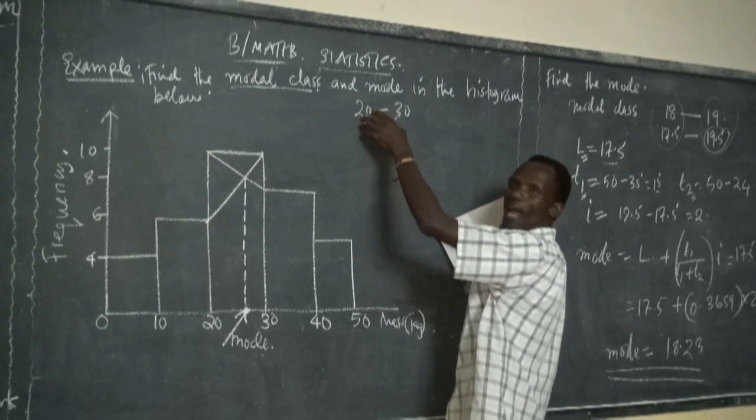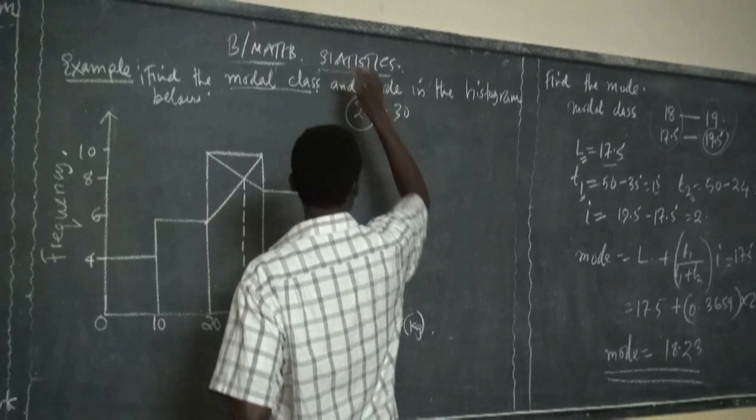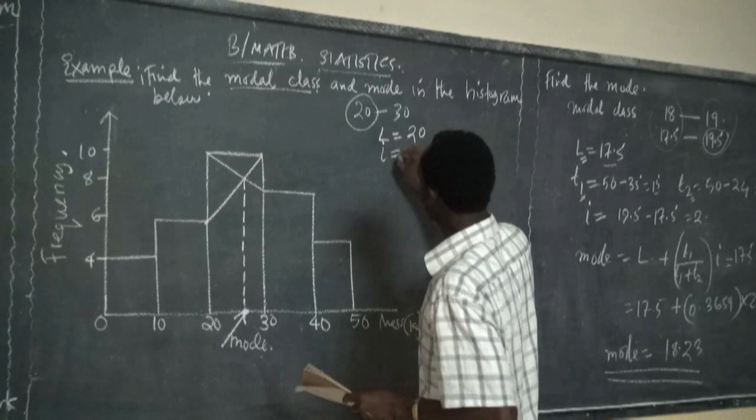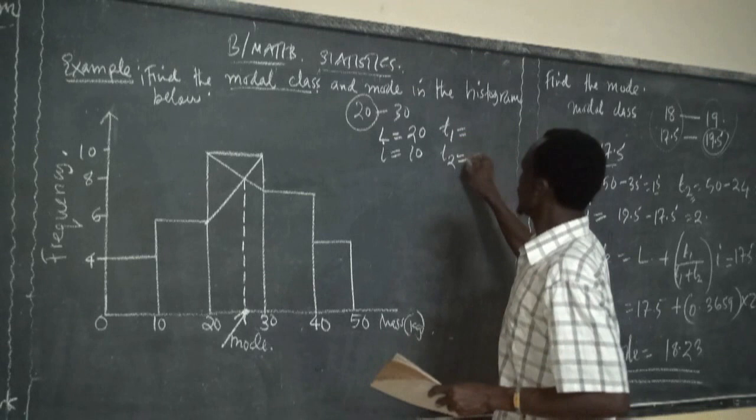When you have been given the diagram, you take the number directly — do not apply plus or minus 0.5 adjustments here. The lower class boundary L = 20. The class interval I = 10.